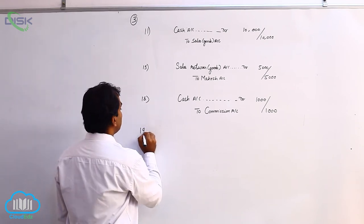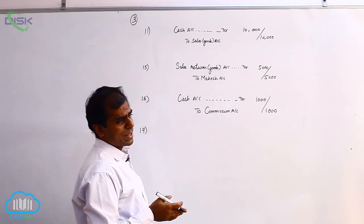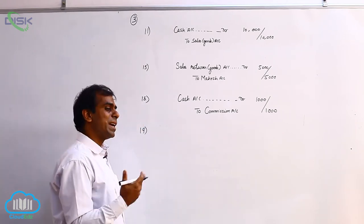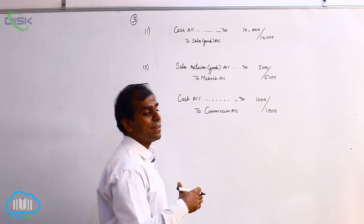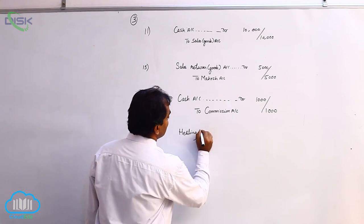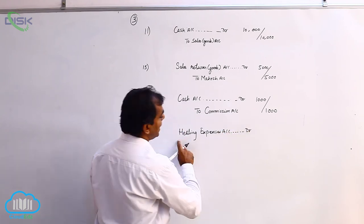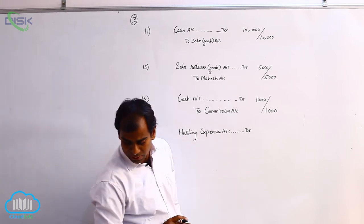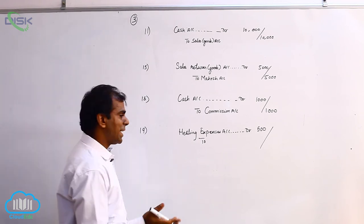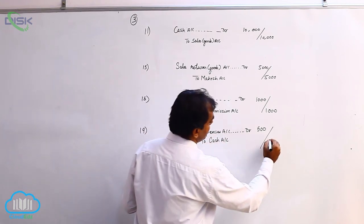The next transaction states heating expenses, which you use in a factory etc. The word 'expenses' is clearly used, so you treat it as a nominal account. Since it is an expense we would have paid cash, meaning cash is going out. Being an expense under nominal account, we debit the expense — so Heating Expenses Account Debit 500. Then we credit cash because we are paying cash; cash is a real account and it is going out — credit what goes out — so Cash Account Credit 500.